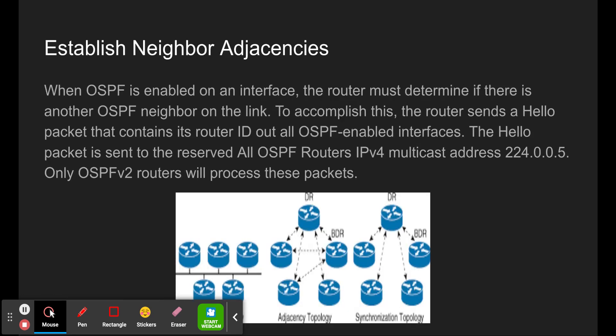To establish neighbor adjacencies, when OSPF is enabled on an interface the router must determine if there is another OSPF neighbor on the link. To accomplish this, the router sends a hello packet containing its router ID out all OSPF-enabled interfaces. The hello packet is sent to the reserved all-OSPF-routers IPv4 multicast address 224.0.0.5, and only OSPFv2 routers will process these packets.